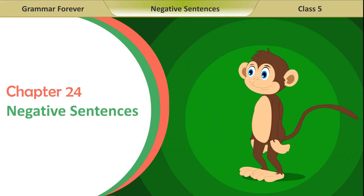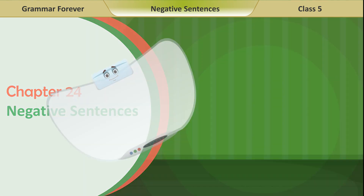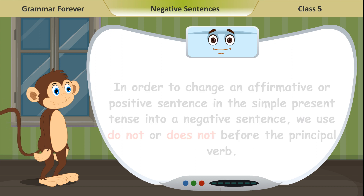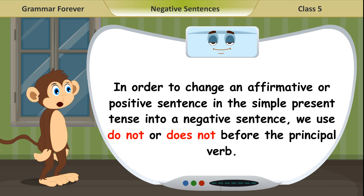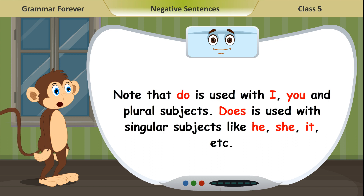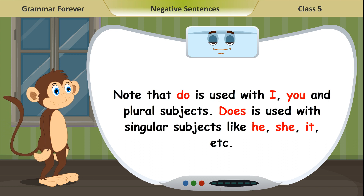Chapter 24: Negative Sentences. A negative sentence or statement states that something is not true or incorrect. In order to change an affirmative or positive sentence in the simple present tense into a negative sentence, we use 'do not' or 'does not' before the principal verb. Note that 'do' is used with I, you, and plural subjects, while 'does' is used with singular subjects like he, she, it, etc.